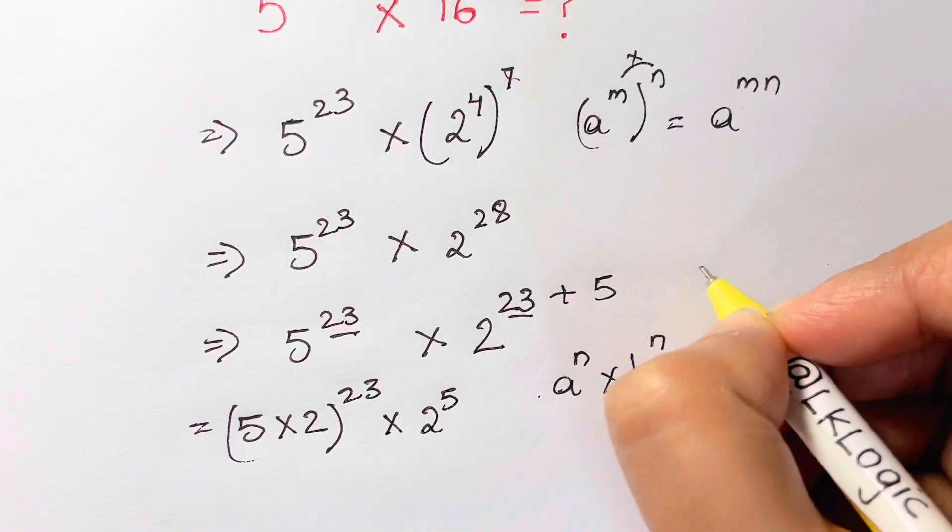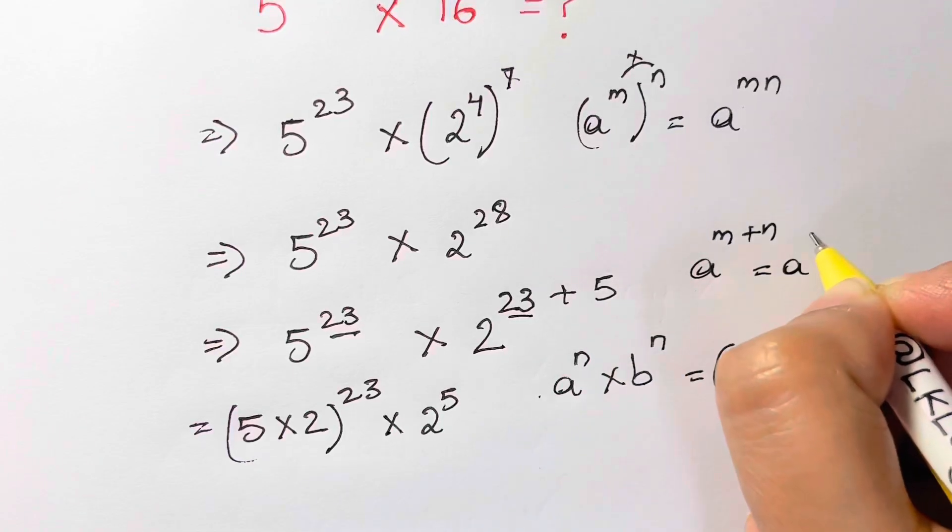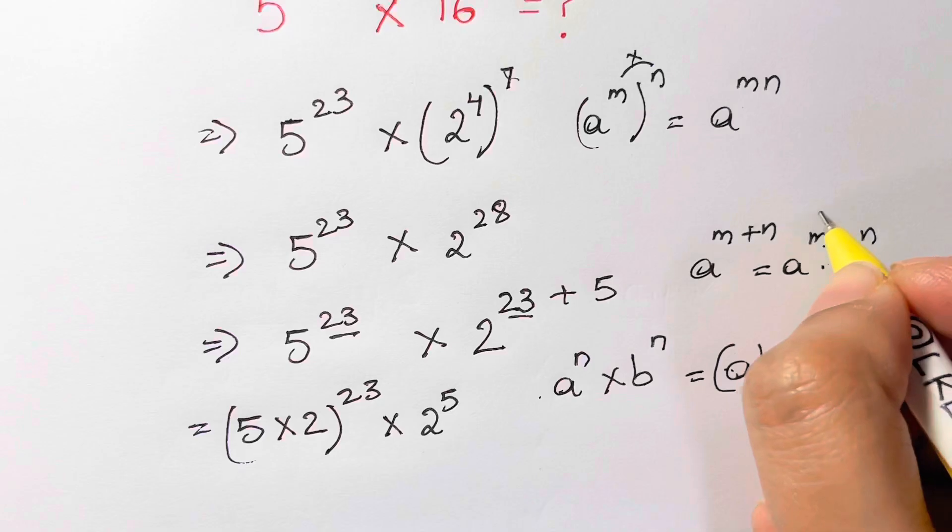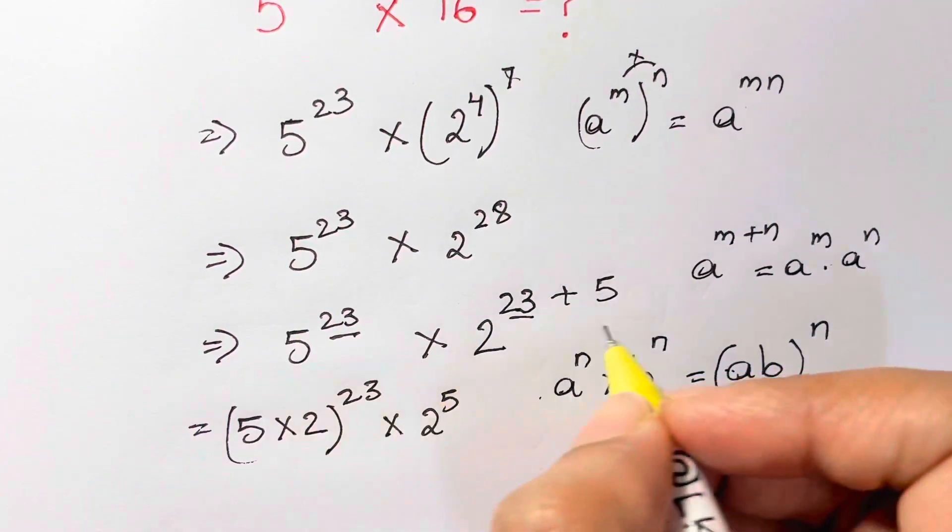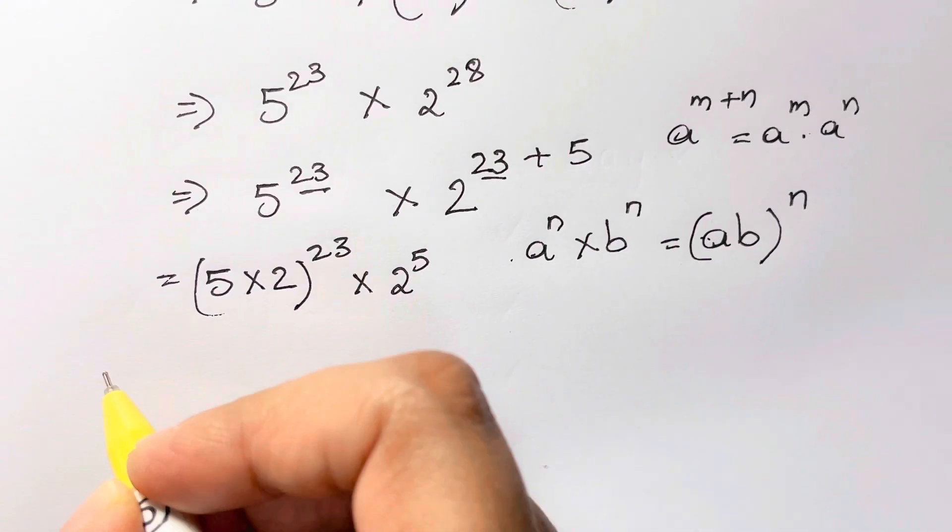Whenever you have something like a to the power of m plus n, you write it like this: a to the power of m times a to the power of n. So I've already taken a to the power of m here and a to the power of n is here.